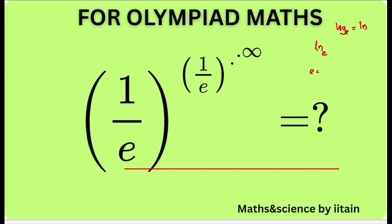It is natural logarithm, E is equal to 2.718. And ln 2, we know, we regularly use it in various physics and science subjects. ln 2 is equal to 0.693. The values up to 10 I have given in my previous lectures, and you can refer to the previous lectures.